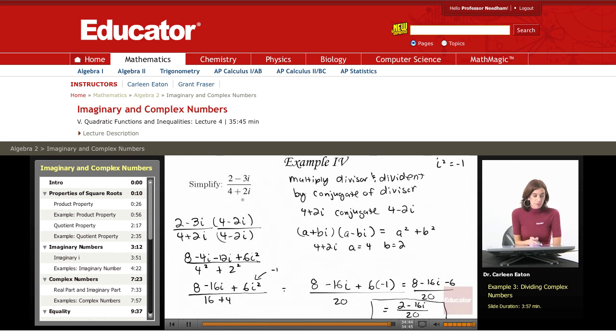So in order to simplify this, I took the conjugate of the denominator, which is 4 minus 2i, and I multiplied both the divisor and the dividend by this conjugate, this complex conjugate. In the denominator, it was easy because I just said, okay, that's this conjugate, multiplying these conjugates gives me a squared plus b squared. So that's 4 squared is 16 and 2 squared is 4 to get 20.